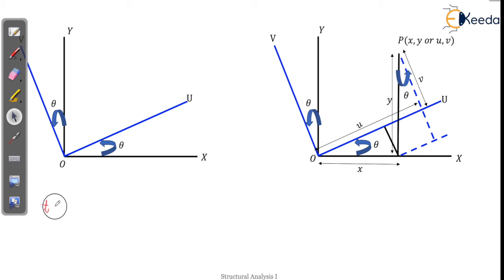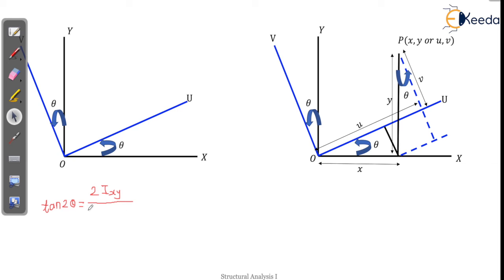tan 2θ equals 2·Ixy divided by (Iyy minus Ixx). So this is the condition for principal axis — you have to remember this. Now, the principal moment of inertia about axes OU and OV — let's see what that is.